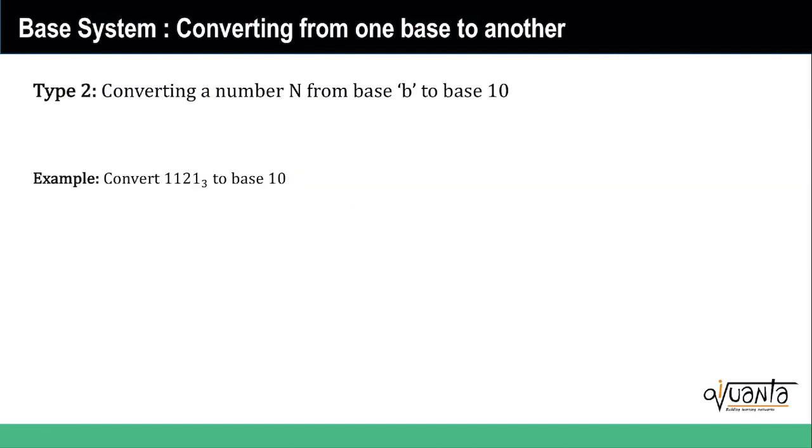The second type is when we are trying to convert anything from base b to base 10, which is the exact reverse of what we saw just now. How do we do that?